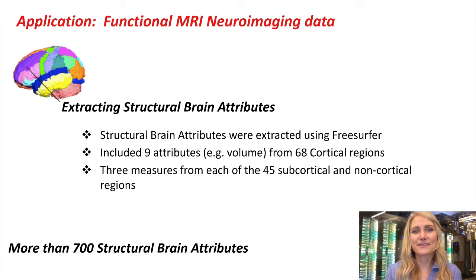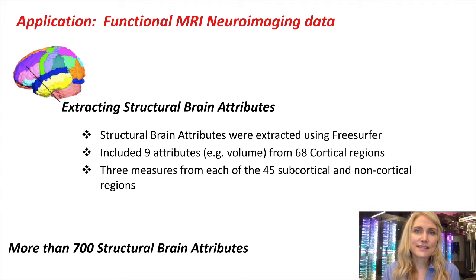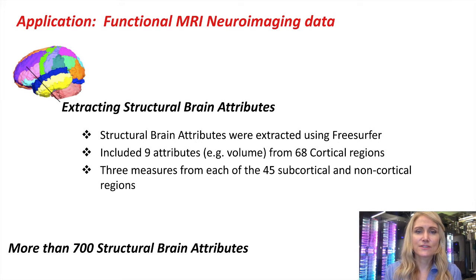My team participated in this competition, and our first goal was to figure out how to derive meaningful information from structural MRI data. The first thing we did was calculate FreeSurfer metrics used for automated brain parcellation. This resulted in nine different attributes, like brain volume, from 68 different cortical regions, as well as three different measures from each of 45 different subcortical and noncortical brain regions. Collectively, this resulted in more than 700 structural brain attributes using just the sMRI data.